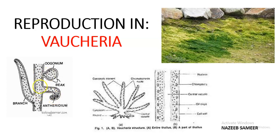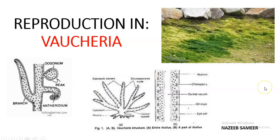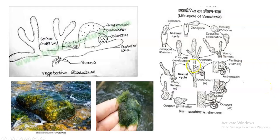During maturity and at the time of sexual reproduction, the antheridial branch will be elongating and forming a septum. This single portion is the antheridium. Before this septum is the vegetative thallus, and after the septum is only the antheridium. We will see this when we discuss sexual reproduction.